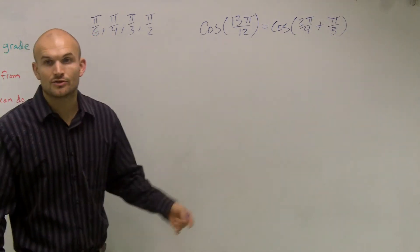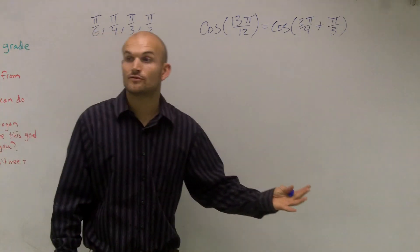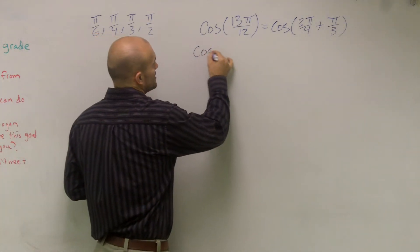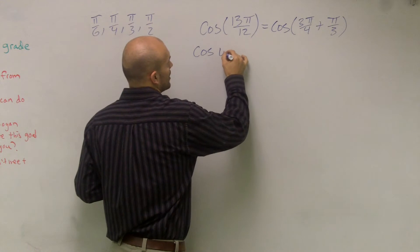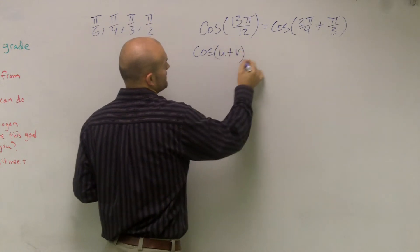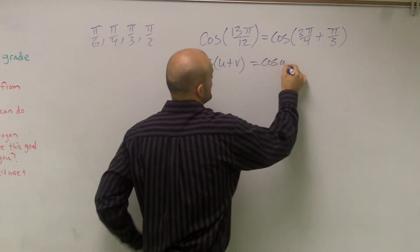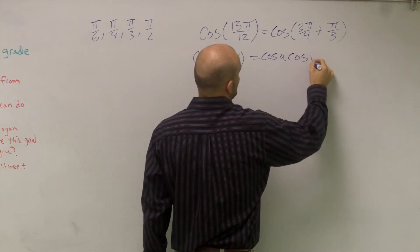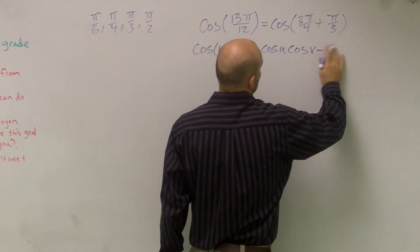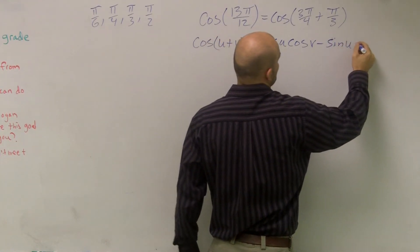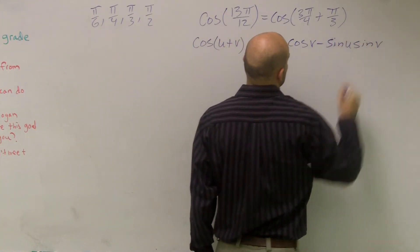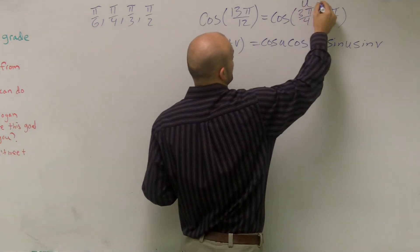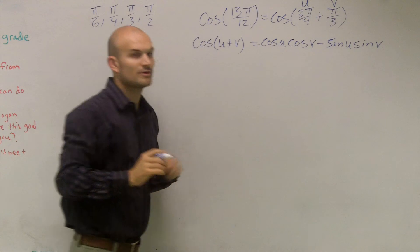Now what I need to do is use the sum formula for cosine to be able to find our value. So the sum formula for cosine of addition of two angles, u and v, equals the cosine of u times cosine of v minus sine of u times sine of v. So I'm going to let 3π/4 be my u and π/3 be my v.